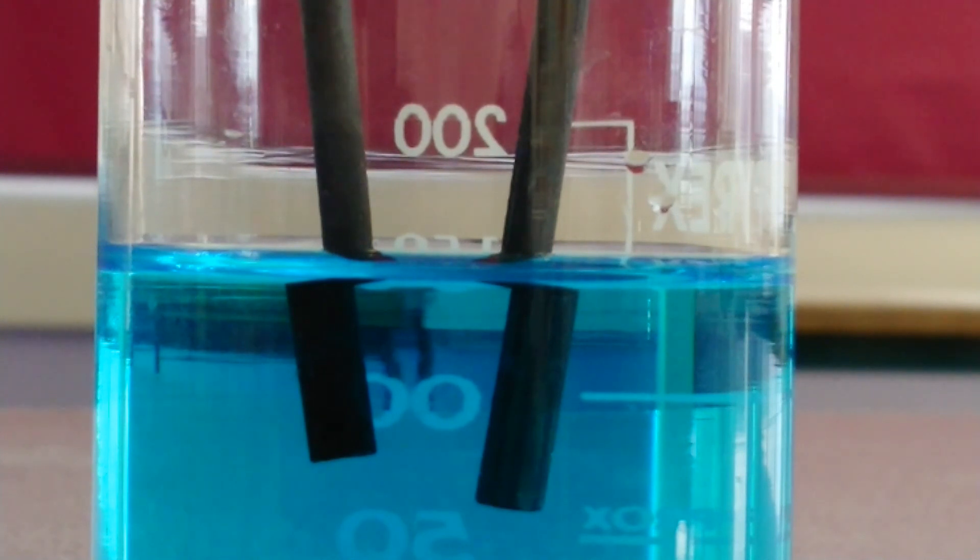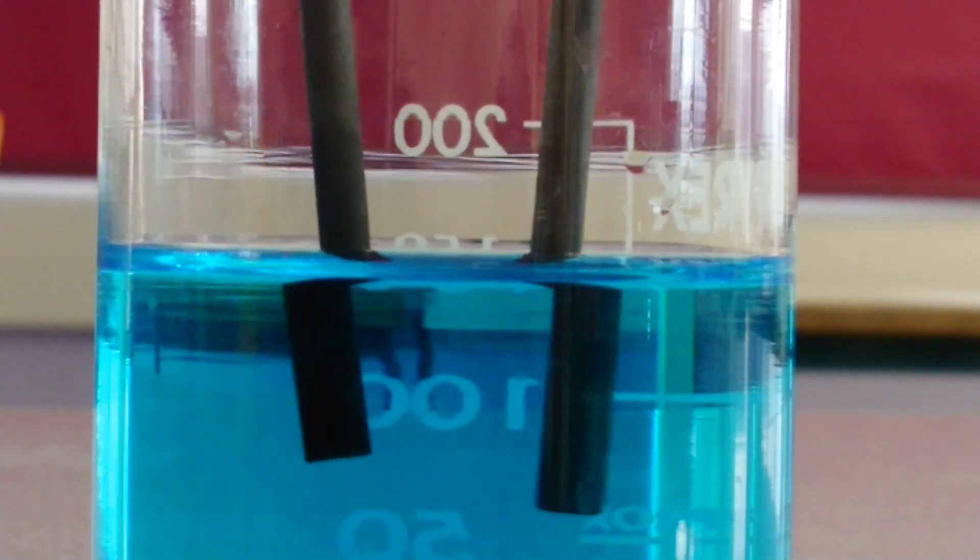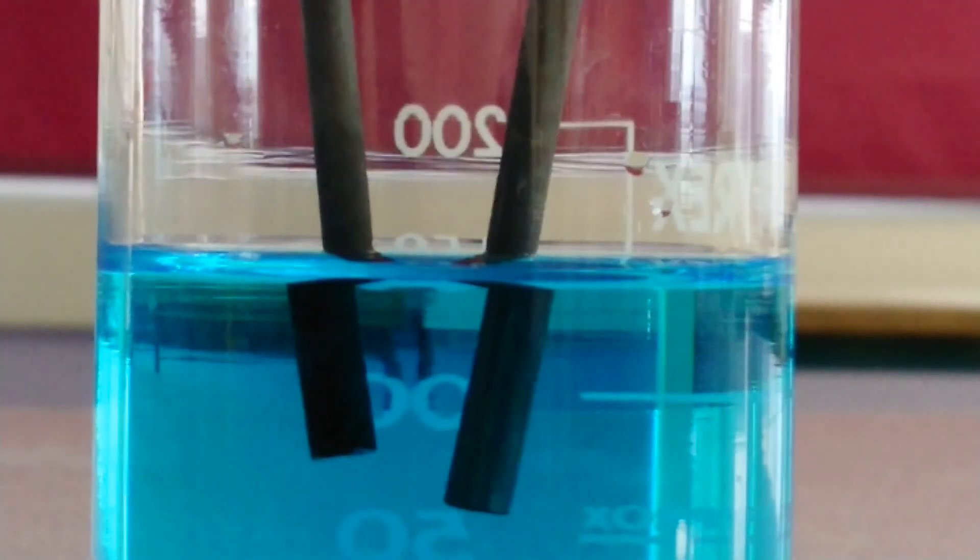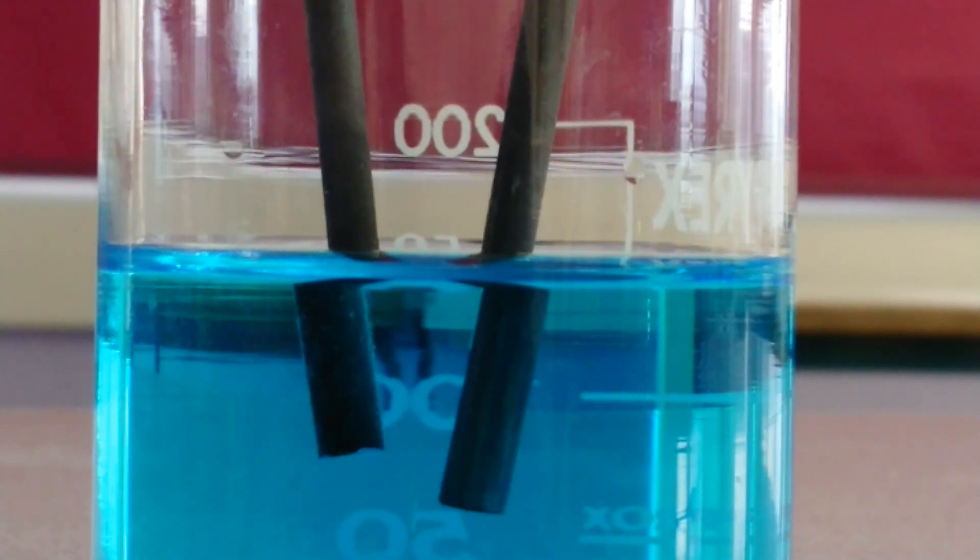We turn our power supply on. Our bulb is now on, and we watch carefully. Looking carefully again at the anode, we can see a gas is clearly being given off - loads of bubbles there. So let's test that gas. Let's hold the litmus paper in there and see what happens.